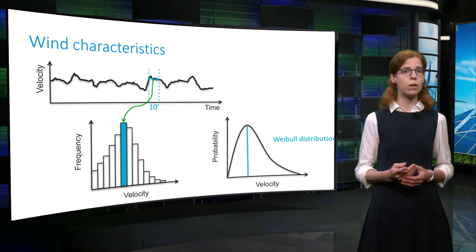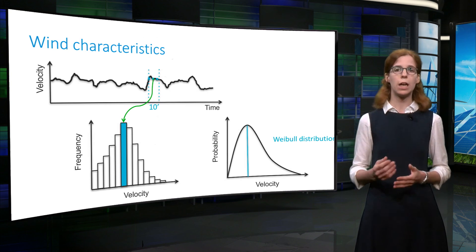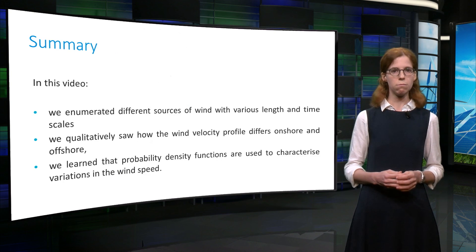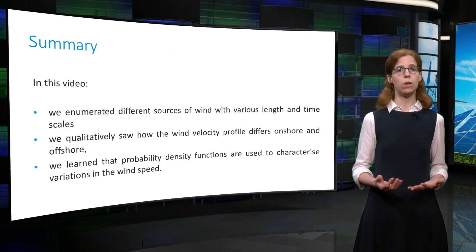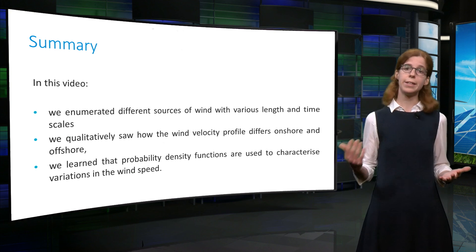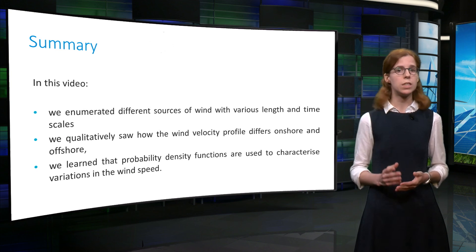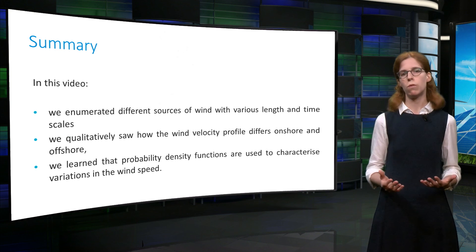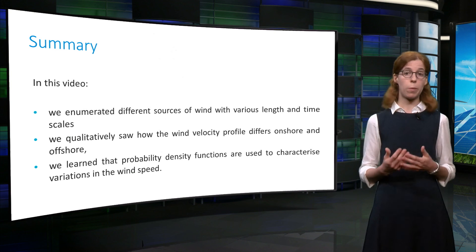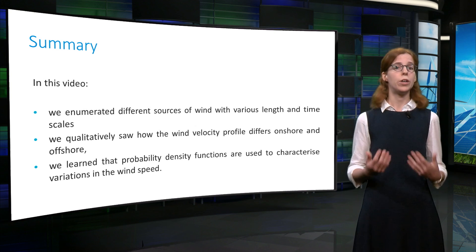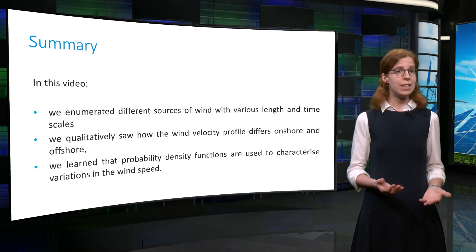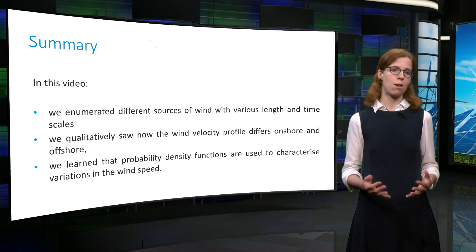In the following video, we will see how these distributions can be used to estimate the energy produced by a wind turbine. To summarize, in this video we enumerated different sources of wind with various lengths and timescales. We qualitatively saw how the wind velocity profile differs onshore and offshore. We also learned that probability density functions are used to characterize variations in the wind speed. In the next video, we will explain the basics of wind power generation.